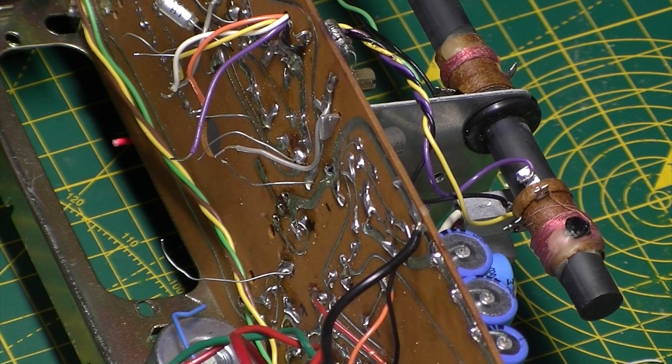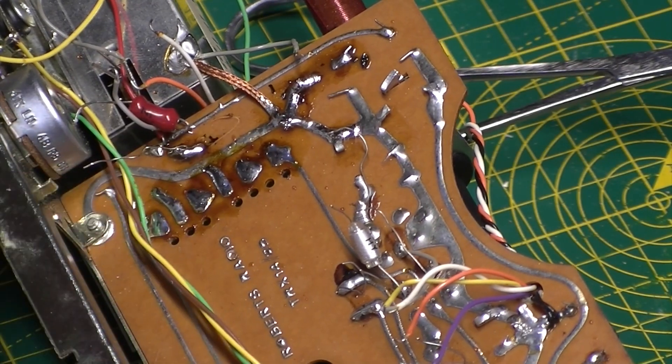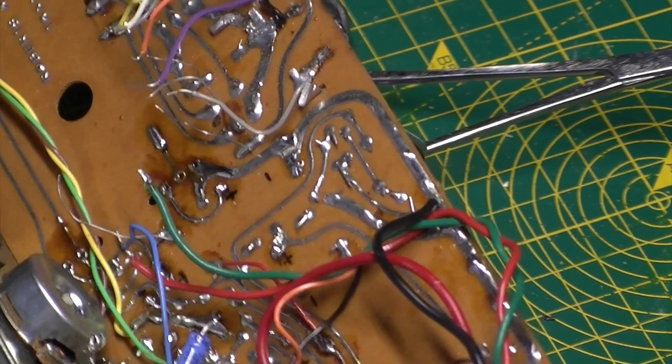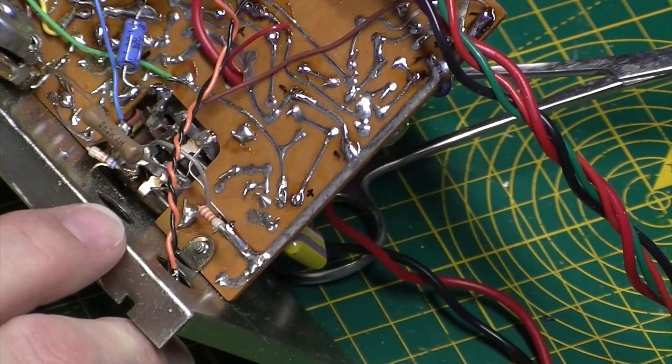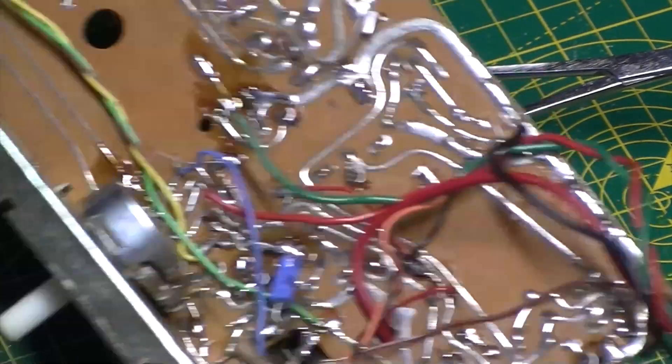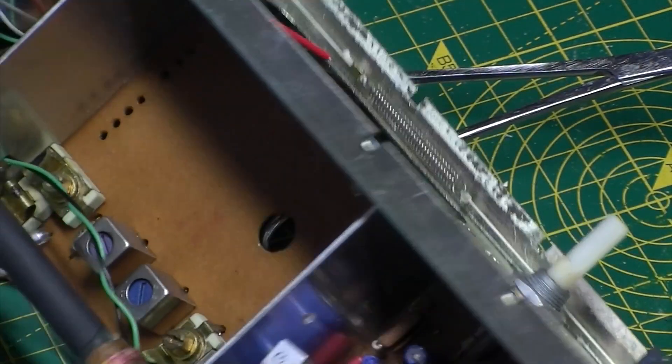Right as you can see I've tinned all these, cleaned them up. And over this side as well that's all done. And over here I've disconnected all the wire into this switch and volume pot.